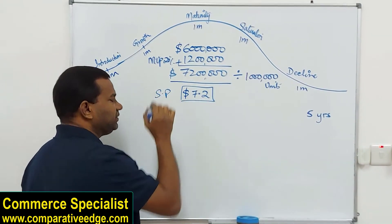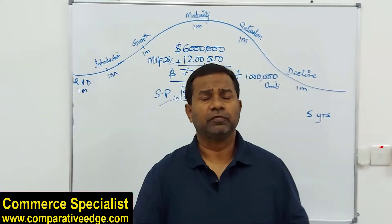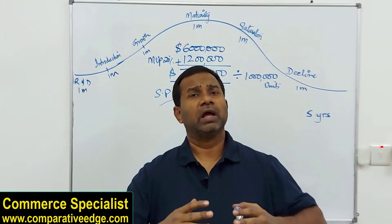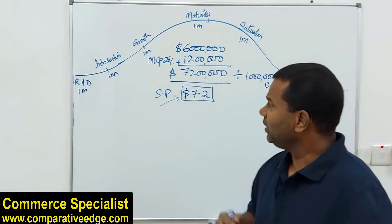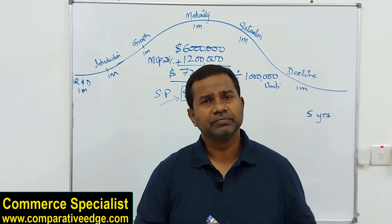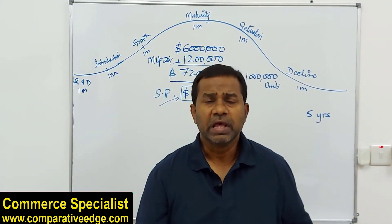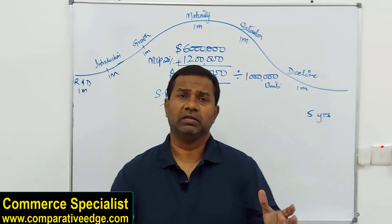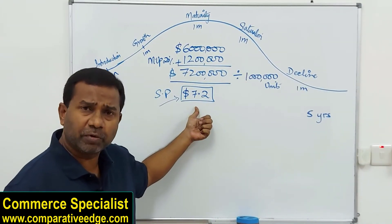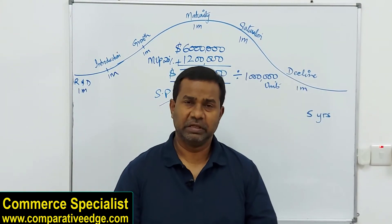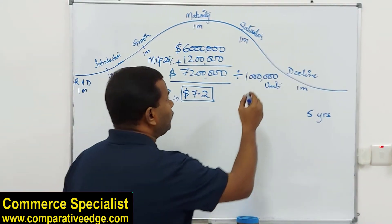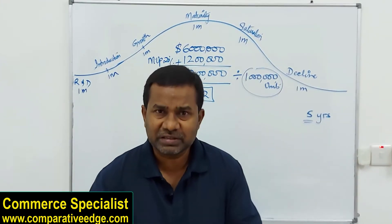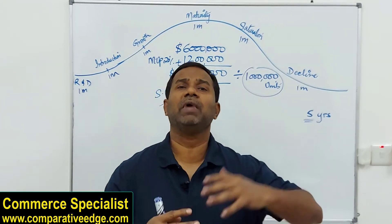Now the biggest question: first, do we have a robust marketing department that will do adequate research to find out whether customers are willing to pay 7.2 dollars for this product? Second, if yes, will the demand last for five years? Let's say the answer is yes — customers are willing to pay 7.2 dollars and demand will exist for another five years. Then, would we be able to sell one million units in five years?